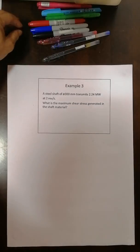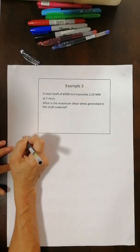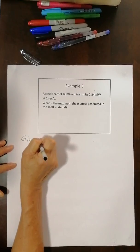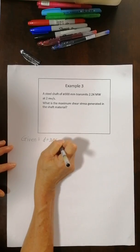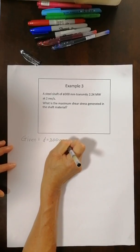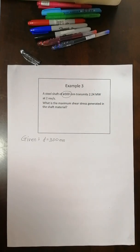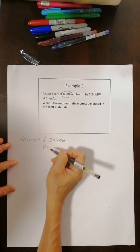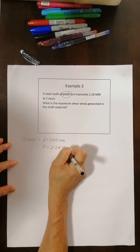So let's write down what is given first. I'll put here as given. I have diameter 300 mm from here. Then I was given power 2.24, not that I was given power.